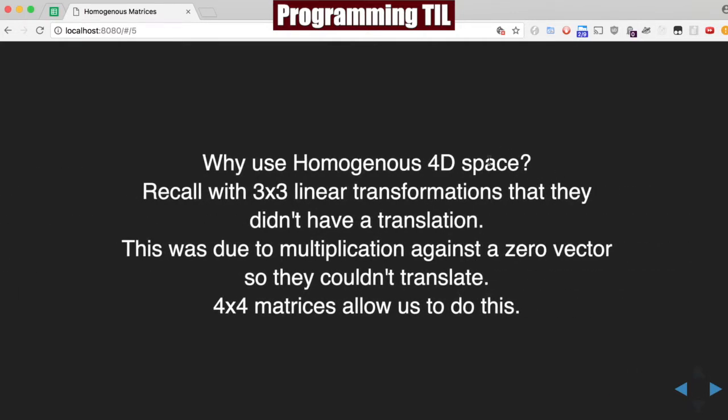So why do we want to use homogeneous 4D space at all? Recall that when we have 3 by 3, we can't have translations, and this is due to the fact that multiplication gets a 0 vector, so then it couldn't end up translating. But 4 by 4 allows us to do this.